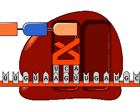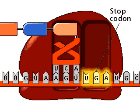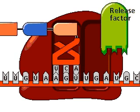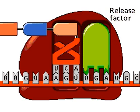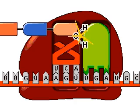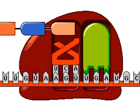Translation is terminated when the ribosome encounters one of three stop codons at the end of the gene. The stop codon shown here is UGA. A release factor recognizes the stop codon and settles into the A site. An enzyme releases the polypeptide chain from its tRNA by adding a water molecule.